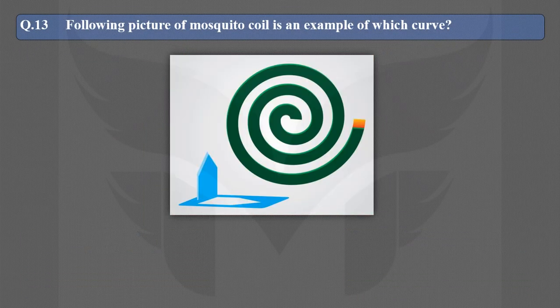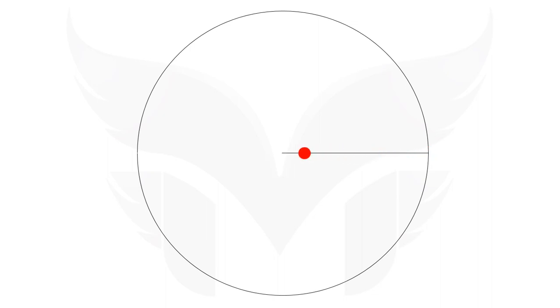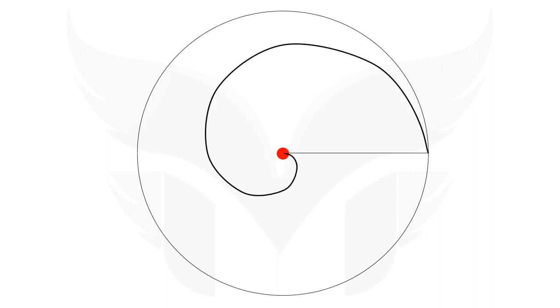Next question: The following picture of a mosquito coil is an example of which curve? The correct option is C, Archimedean spiral. A spiral is obtained when a link rotates about one of its ends in an anti-clockwise direction, and simultaneously a point on the link moves linearly from one end to the other. The path traced out by that point is a spiral, and the shape of a mosquito coil is like a spiral.